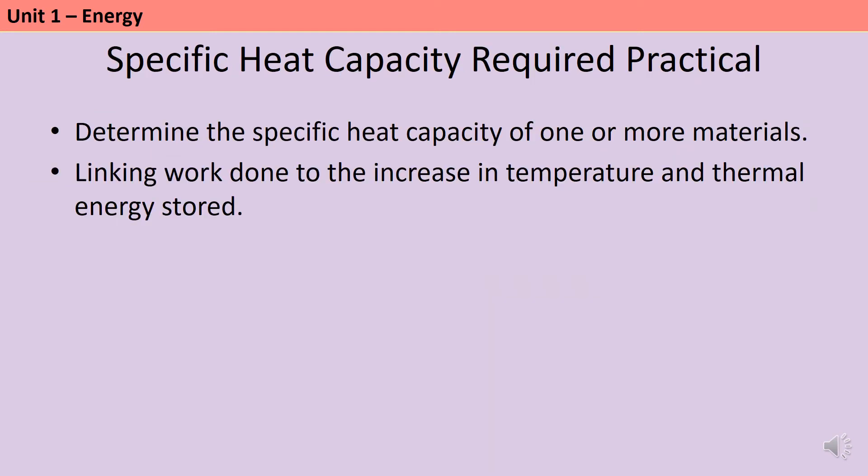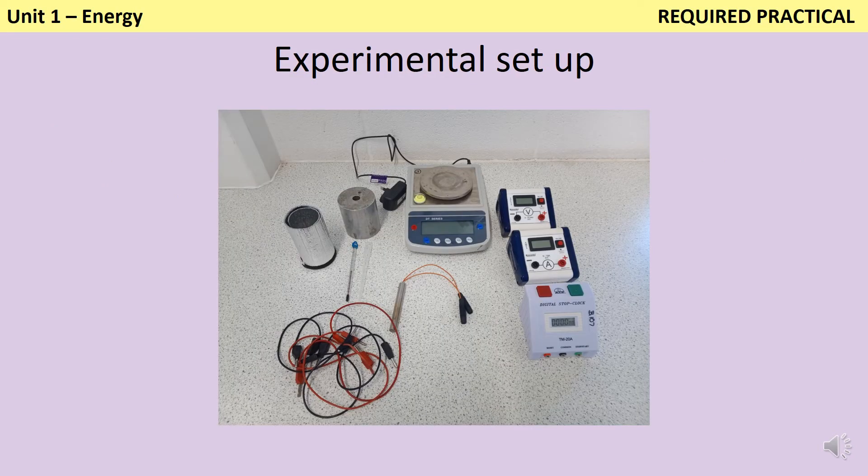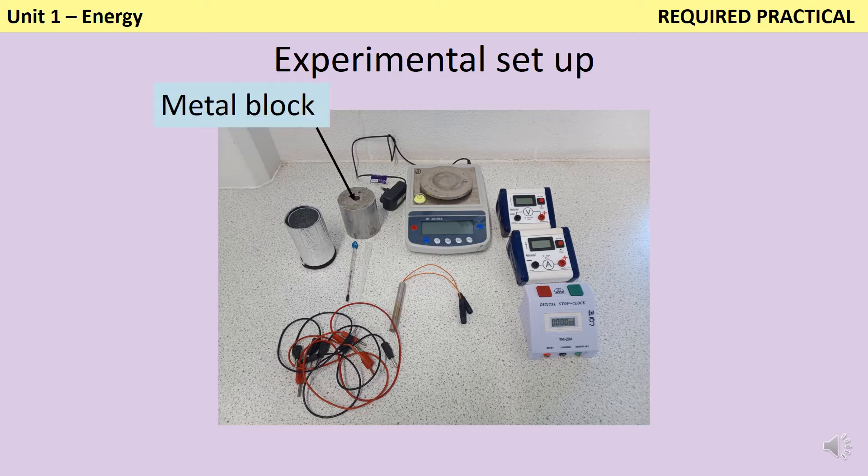Now on to the required practical, which asks us to determine the specific heat capacity of one or more materials by linking the work done to the increase in temperature and the thermal energy stored. To set up this practical, I need a number of pieces of equipment. First, I need the substance that I'm trying to work out the specific heat capacity of. In this instance, I'm using a metal block, although you may also have investigated the specific heat capacity of liquids, in which case you would have used a large beaker full of that liquid.